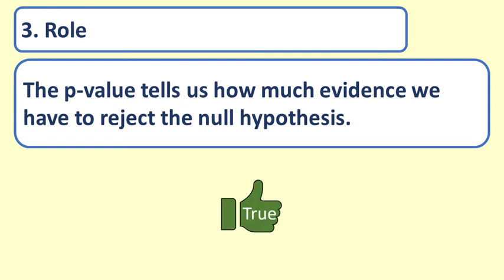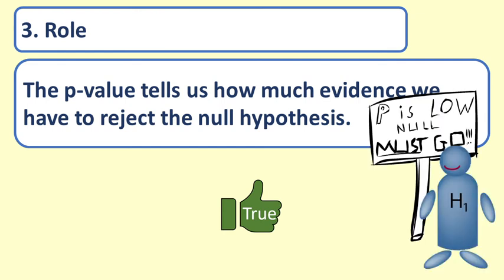True. A small p-value indicates that we are unlikely to have achieved this result if the null hypothesis were true. Thus, the less likely it is, the smaller the p-value, the more evidence we have that the null hypothesis should be rejected. Remember, p is low, null must go.